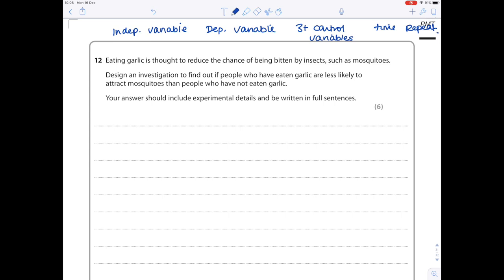Starting well, the independent variable - what am I changing? Some people, so according to this experiment some people will have garlic and some people won't. So some people will be fed garlic whilst others will not be fed garlic. I'm really making it clear, so independent variable done. What will I be measuring? Well, how could I work out if they're going to stand more or less of a chance of being bitten by mosquitoes? I'm going to count the number of mosquito bites. I will count the number of mosquito bites received by both types of people.